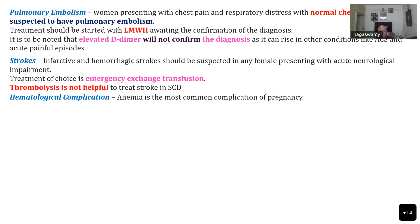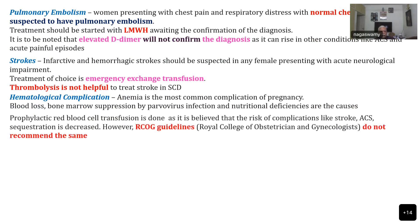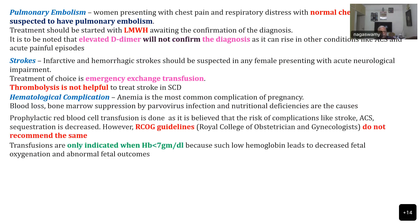Coming to hematological complications, anemia is the most important complication. It may be exacerbated due to repeated blood loss, bone marrow suppression, and nutritional deficiencies. Prophylactic red blood transfusion is done in some centers, as it is believed to decrease the risk of complications like stroke, ACS, and sequestration, but the Royal College of Obstetricians and Gynaecologists does not recommend it. If hemoglobin is less than 7 g/dL, there is a definite indication for transfusion to correct the anemia.